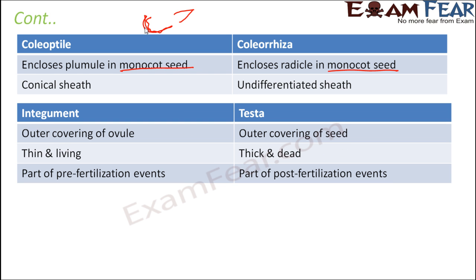Integument and testa: integuments are the layers which cover the ovule — this can be one single layer or multiple layers. Testa is the outermost covering of the seed and is a thick, dead layer, whereas integument is a thin but living layer. Integument exists during pre-fertilization events, before fertilization takes place, when only the ovule exists. After fertilization, the ovule gets converted into a seed, so there is no more integument — the integument gets converted into the seed coat, and that seed coat has testa as the outer layer.